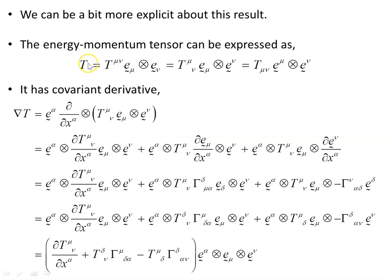The energy-momentum tensor can be expressed in the tangent basis with one index up and one down, or both indices up in the dual basis — these are tensor products of the basis vectors. Taking the covariant derivative — the ∇ part — we apply the product rule. The first part is the partial derivative of the components with respect to α. Next is the partial derivative of the e_μ basis vectors with respect to coordinate x^α, and finally the partial derivative of e^μ with respect to x^α. The manifold is determined in terms of its coordinates, so we're taking partial derivatives with respect to those coordinates.